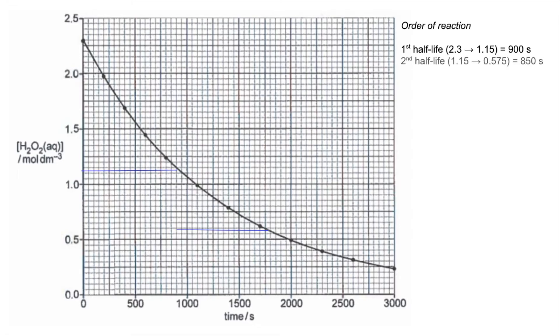And the second half-life has taken about 850 seconds. So we can say that the half-life is roughly constant, therefore it's first order with respect to hydrogen peroxide. To get the rate constant we can now write the rate equation, because we know it's first order with respect to H₂O₂. So there's the rate equation. Rearranging for k gives us that. Now I'm just going to substitute in my initial rate that I calculated at the start of this part of the question.